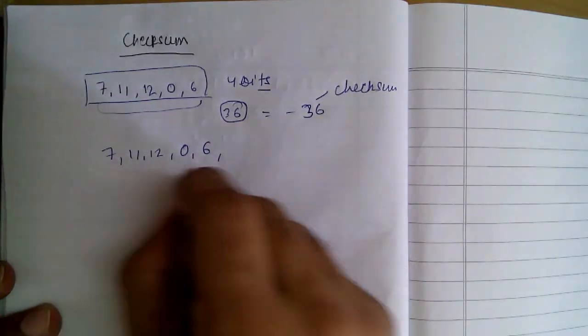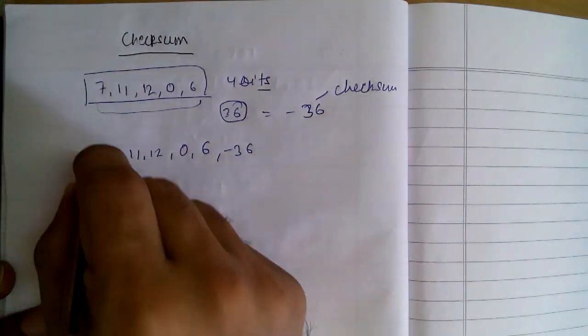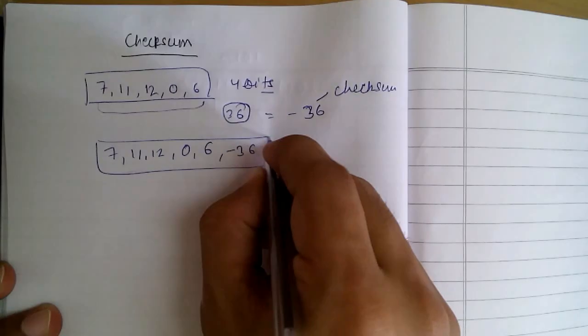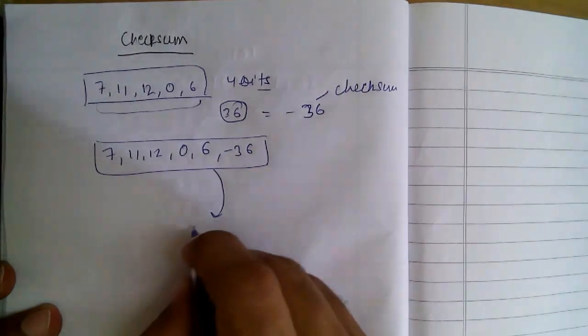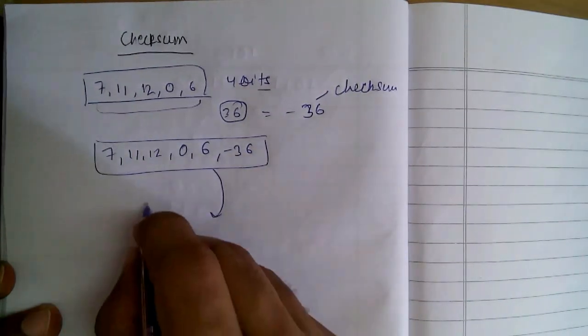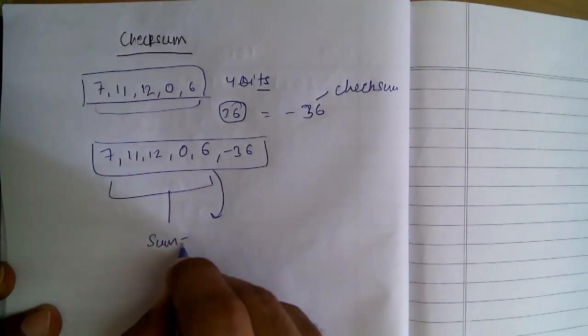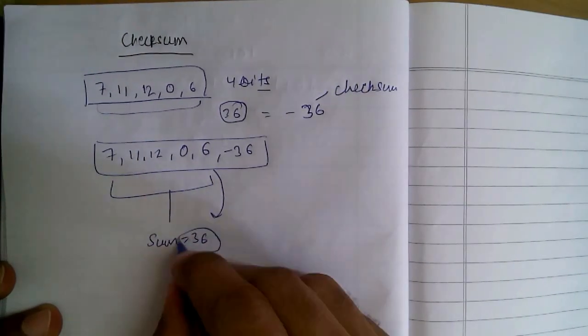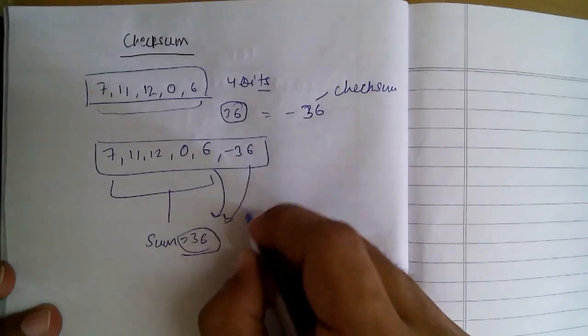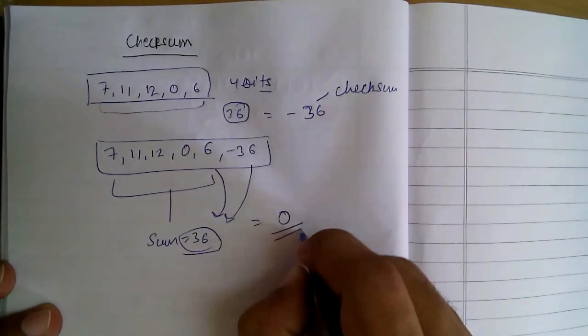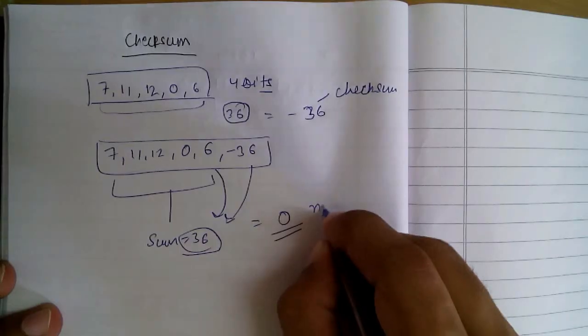The sender sends this data along with minus 36. Then the receiver receives this and also performs the sum, which is 36. When he adds these two, he gets 0, which denotes that no error occurs.